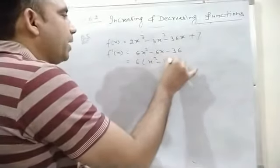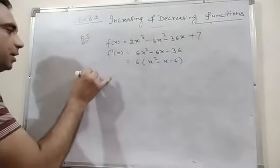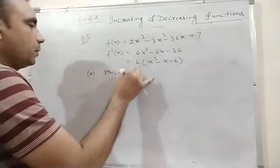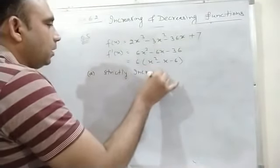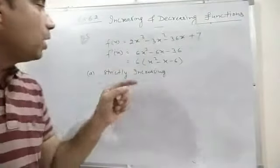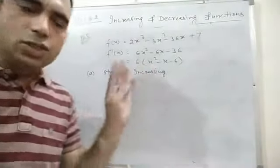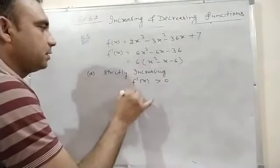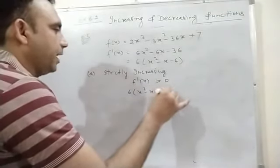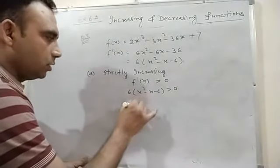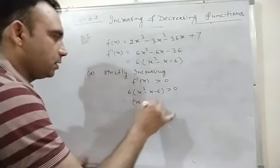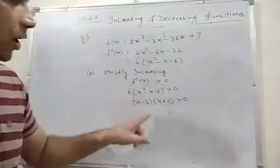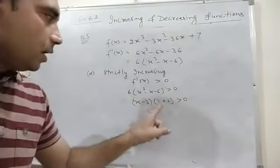For strictly increasing, f'(x) > 0, i.e., 6(x² - x - 6) > 0. Dividing by 6: (x² - x - 6) > 0. Factoring: (x - 3)(x + 2) > 0. Now from 11th class linear inequations, we solve (x - 3)(x + 2) > 0.